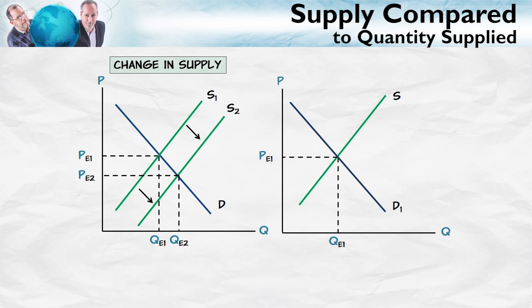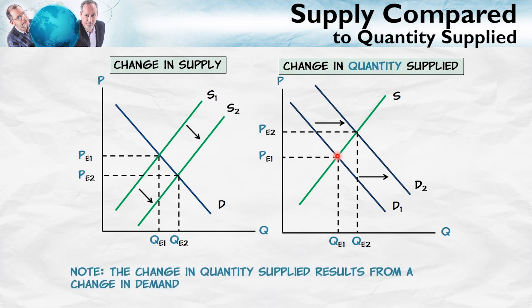Now on the right, suppose that the demand increases. Notice that the increase in demand increases the quantity supplied from QE1 to QE2 along a fixed supply curve. The supply hasn't changed. The supply curve hasn't moved. So the supply is the same, but the quantity supplied has increased.